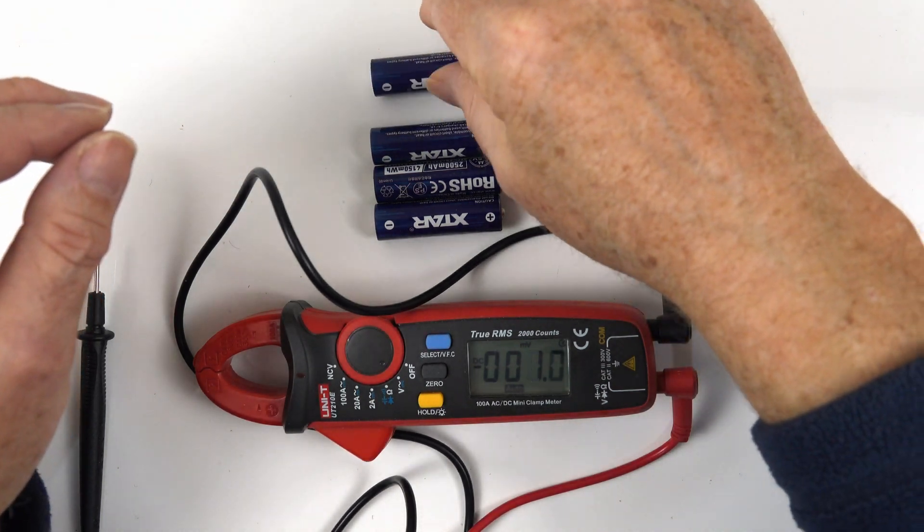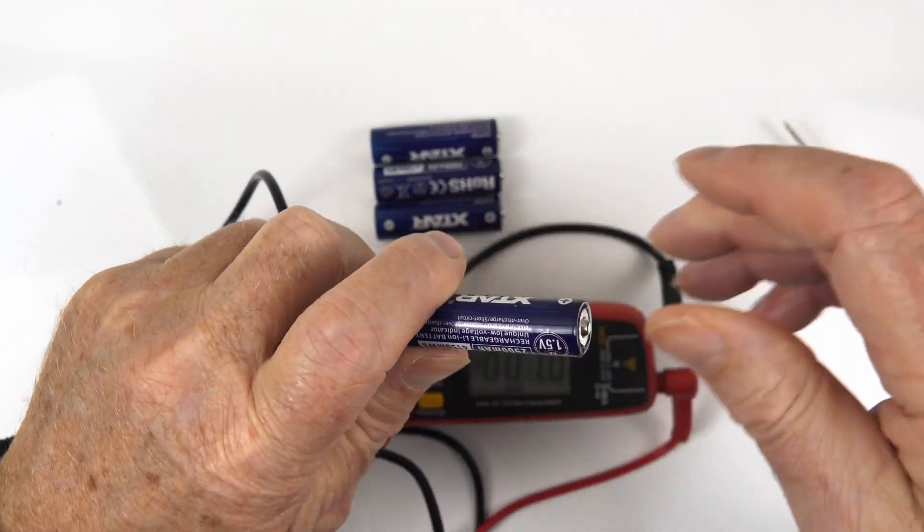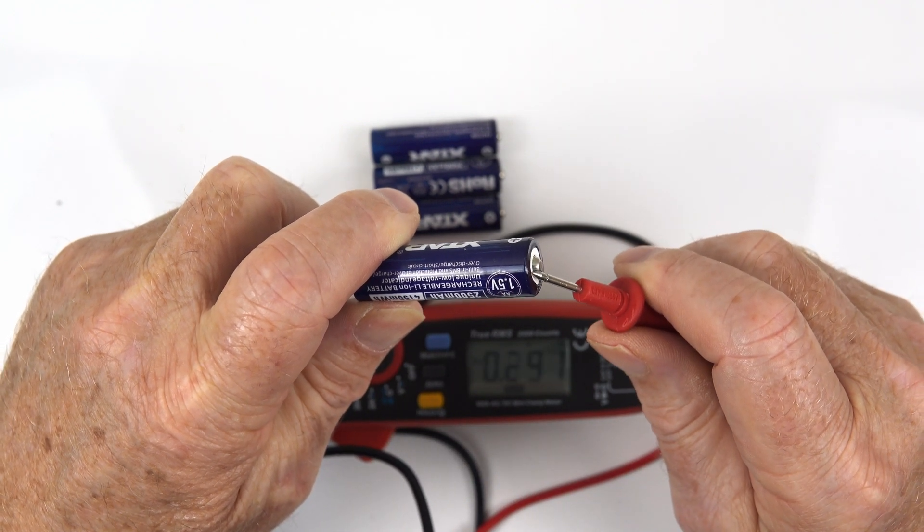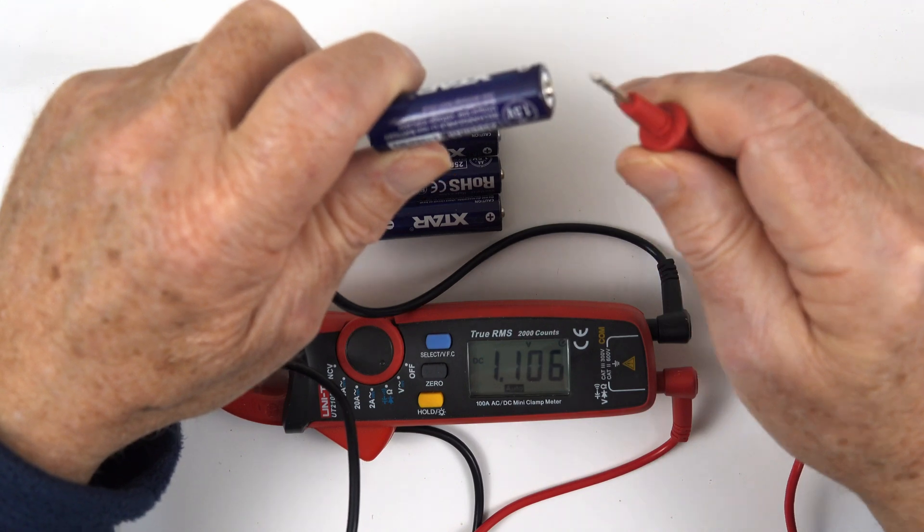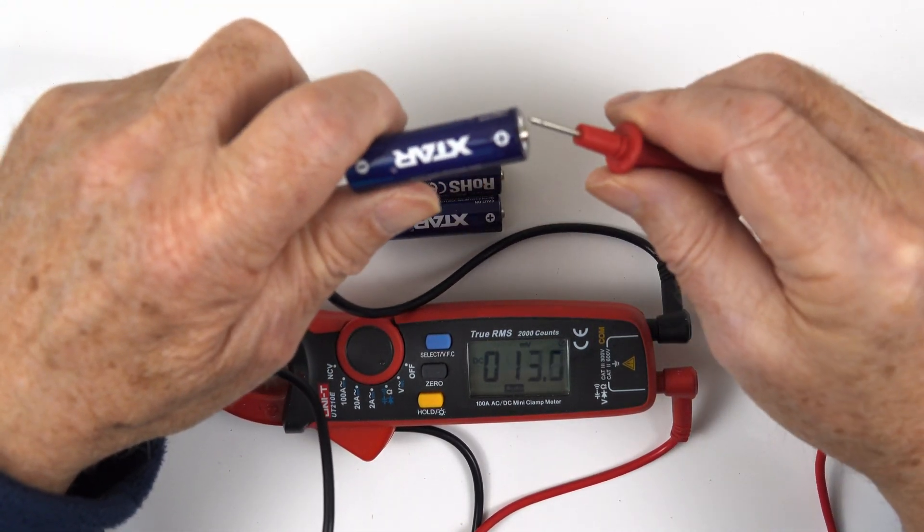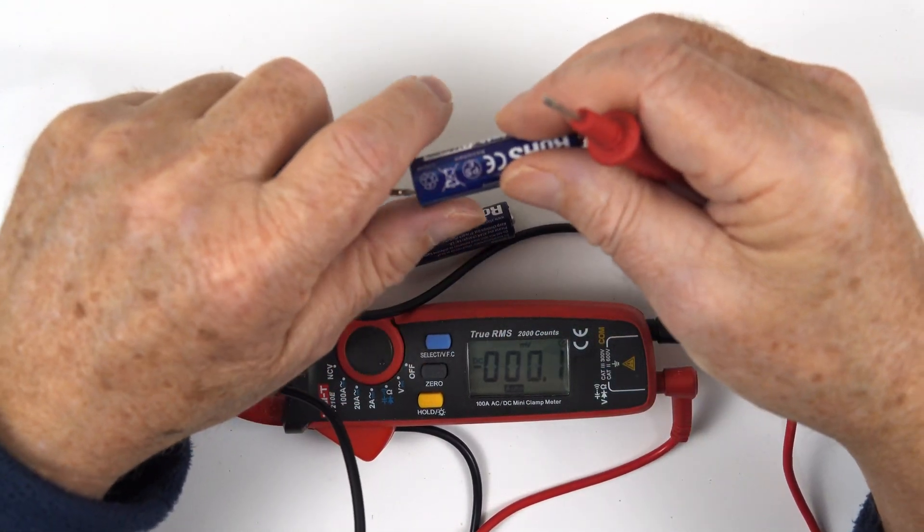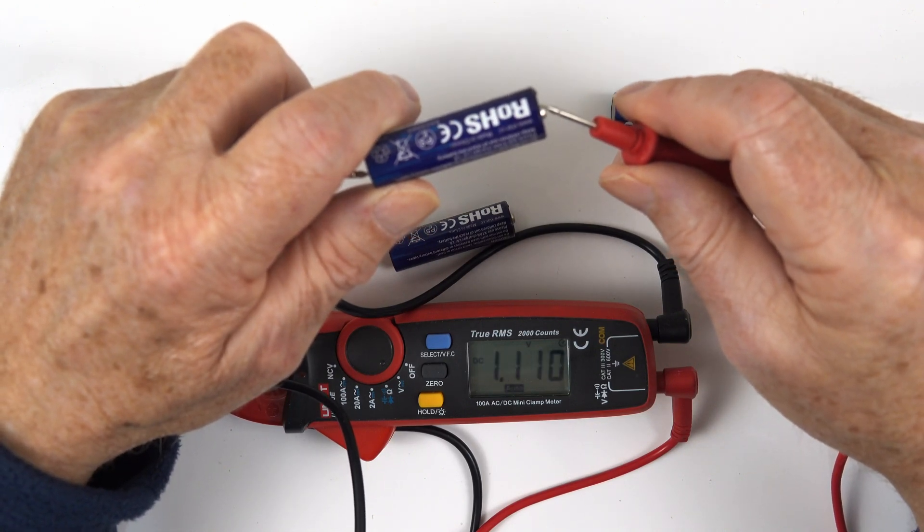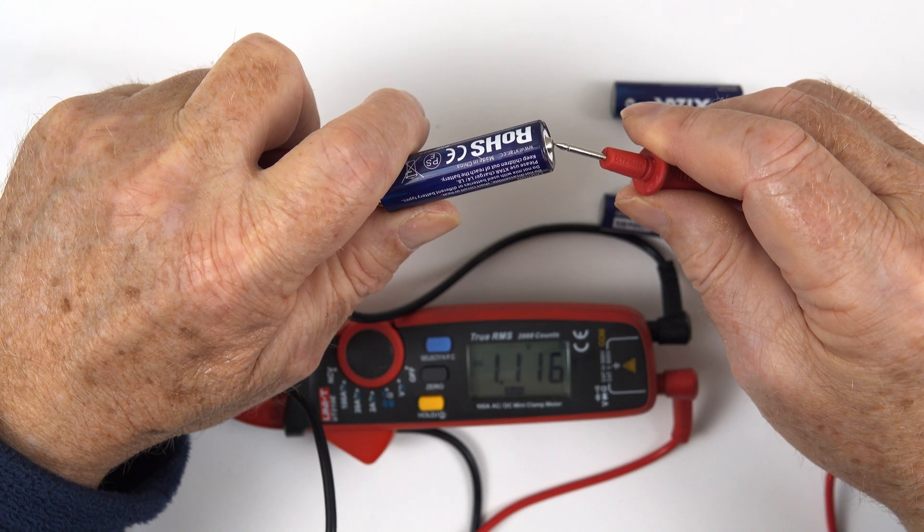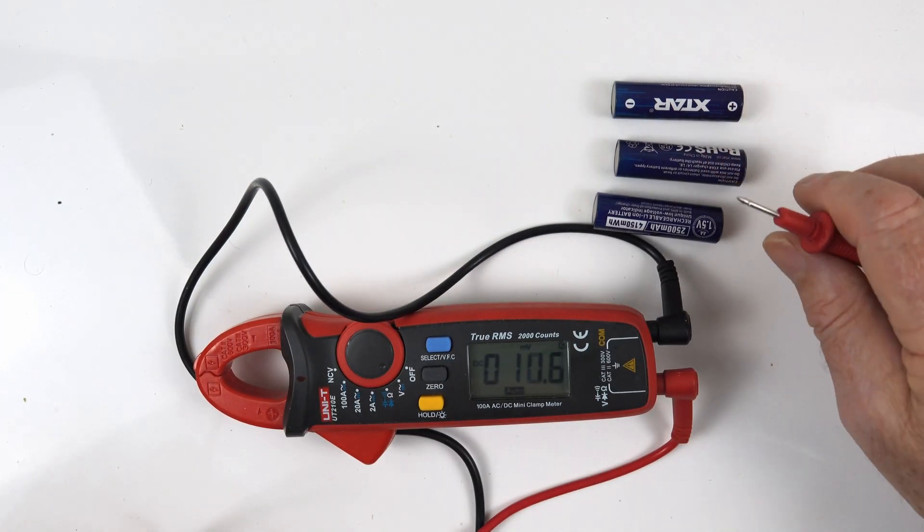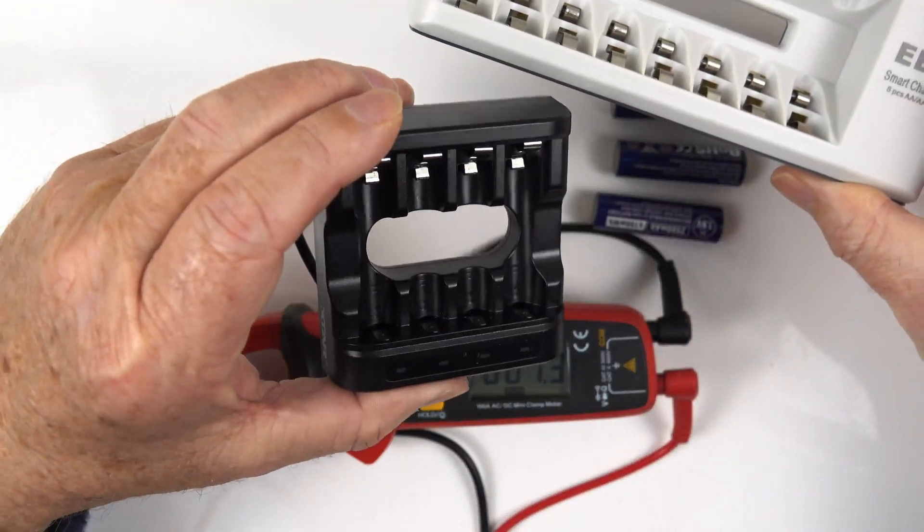Now I've run these batteries completely flat. And the torch was used. And when the light went out, that was the time to pull the battery out. So what have we got? We've got one point, I'll move that across a little bit so you can see, one point 106, one point 108, one point one zero, and one point one six. So as you can see, they're well and truly under 1.5 volts.